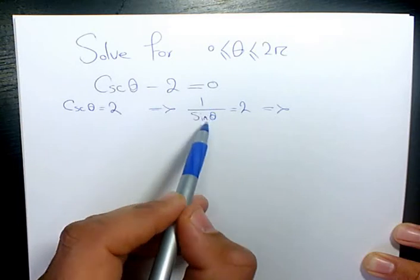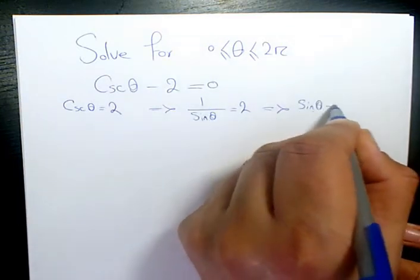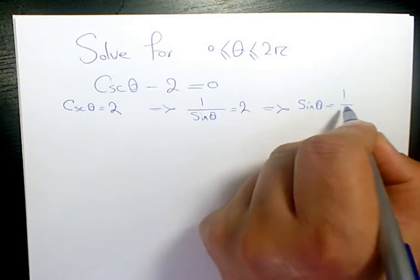And then if I want to make it like sine theta, I need to flip both sides. So 1 over sine theta becomes just sine theta, and 2 becomes 1 over 2.